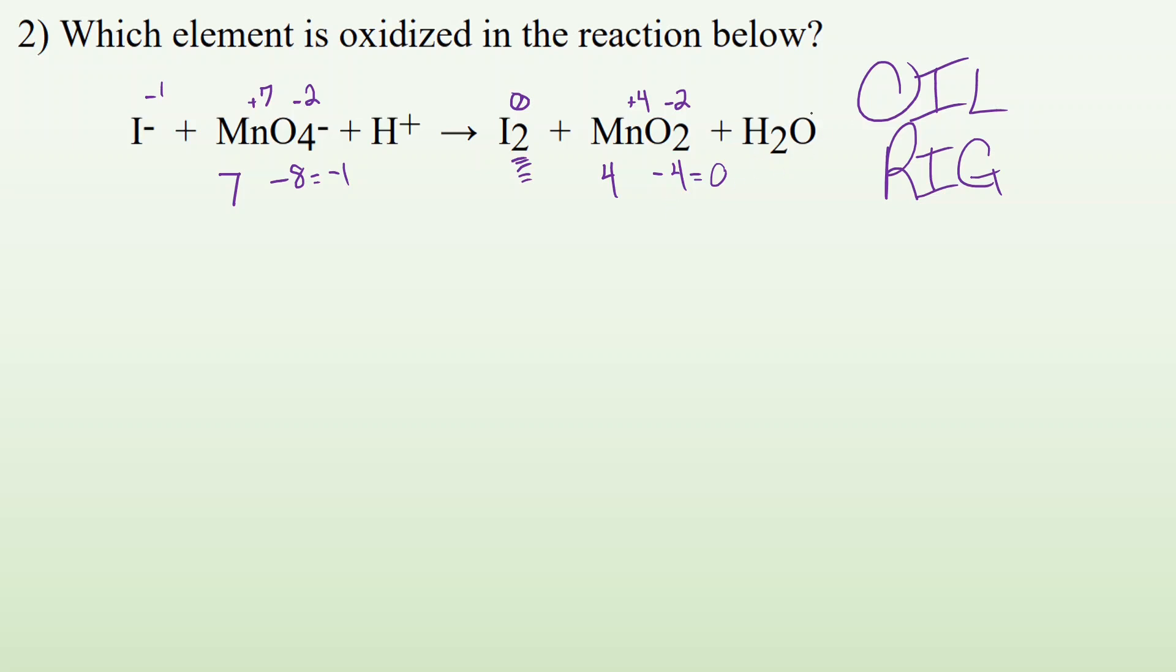Now H2O, oxygen, old reliable, minus two. And that tells me that if the whole thing has to equal zero, there must be a plus two. And where is it coming from? The two hydrogens. So each hydrogen is plus one.